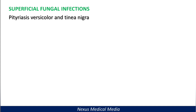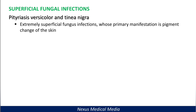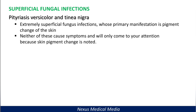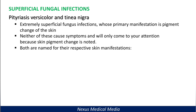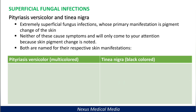The two superficial fungal infections we focus on are pityriasis versicolor and tinea nigra. These are extremely superficial fungi whose primary manifestation is a pigment change on the skin. Neither causes symptoms like itching — you simply see a change in skin color, either hyperpigmentation or hypopigmentation. Both are named for their respective skin manifestations: pityriasis versicolor is multicolored, while tinea nigra — 'nigra' meaning black — produces black-colored patches.